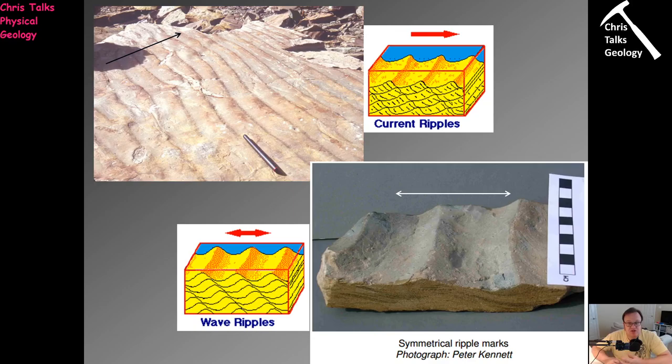Whatever is transporting the sediment is going in one direction — something like a river or the wind blowing in the desert. Looking at this picture, I can see the pattern of low angle then steep repeating, which tells me the sediment is starting over here and being transported in this direction, shown by the black arrow. That tells us the direction in which the sediment is being transported, which is extremely helpful to geologists.